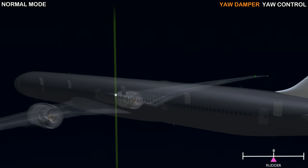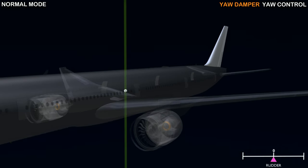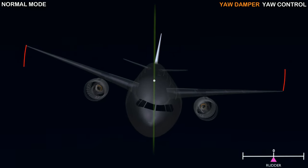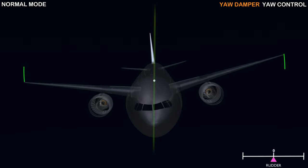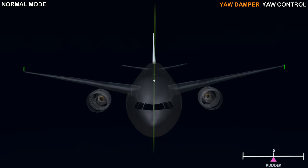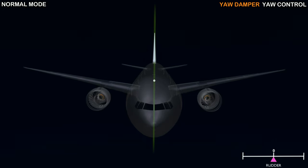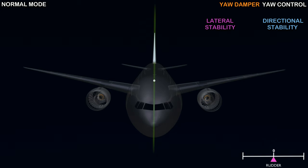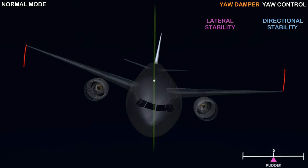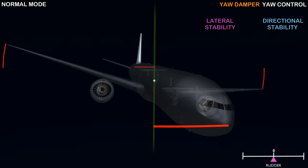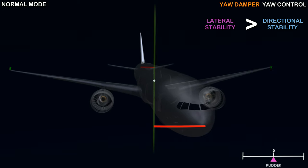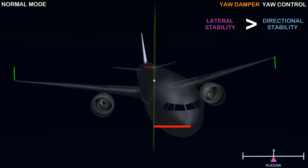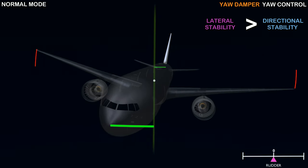Yaw damper. The yaw damper software function on the Boeing 777 is used to prevent the dutch roll. When a wind disturbance causes the aircraft to roll, without any control surface input, the aircraft will recover in a series of decreasing left and right oscillations. The ability of the aircraft to recover from roll is known as positive lateral stability. Lateral and directional stability are interrelated. For now, remember the roll motion causes a yaw motion, and the yaw motion causes a roll motion. Therefore, an aircraft disturbed in roll will also be disturbed in yaw. Now as the aircraft tries to stabilize, the lateral stability being stronger than the directional stability recovers faster. The weaker directional stability lags behind, and the aircraft enters an out-of-phase oscillation known as the dutch roll.